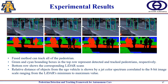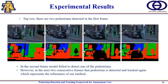Here are some experimental results. The fused method can track all pedestrians across four successive frames. Green and cyan bounding boxes in the top row represent detected and tracked pedestrians respectively; the bottom row shows corresponding LiDAR scans with relative distance shown via a jet color spectrum. In another scenario, a model failed to detect one pedestrian in the second frame, but in the next two consecutive frames that pedestrian was detected and tracked again, demonstrating the robustness of our method.